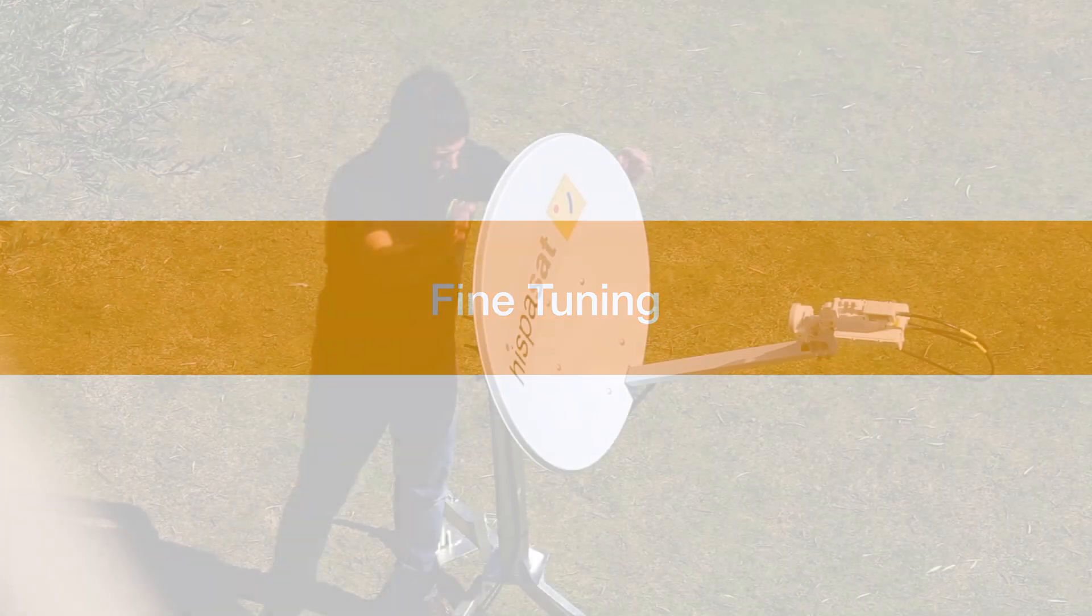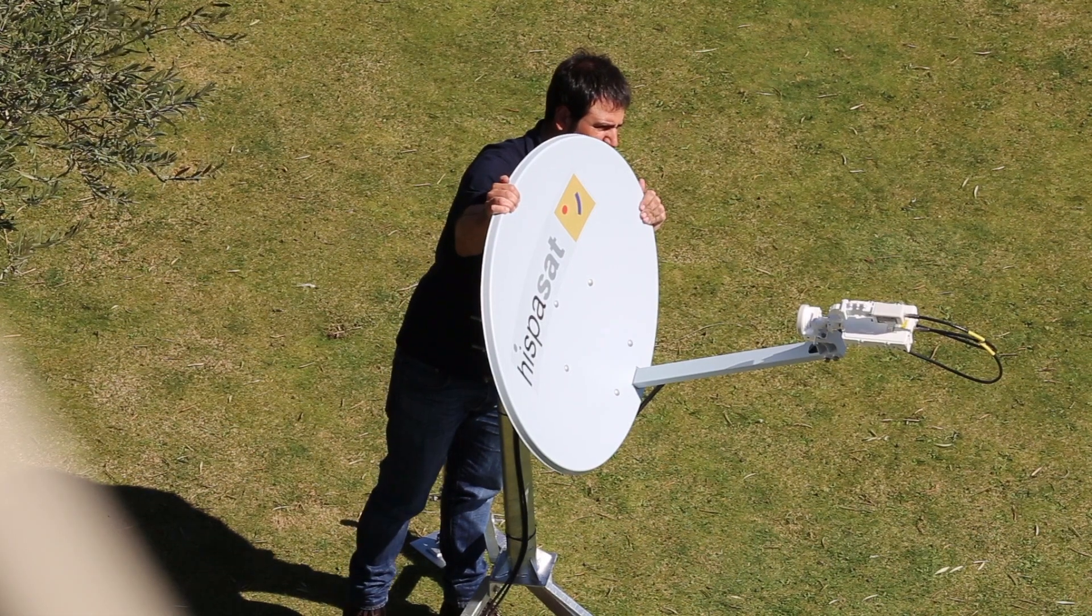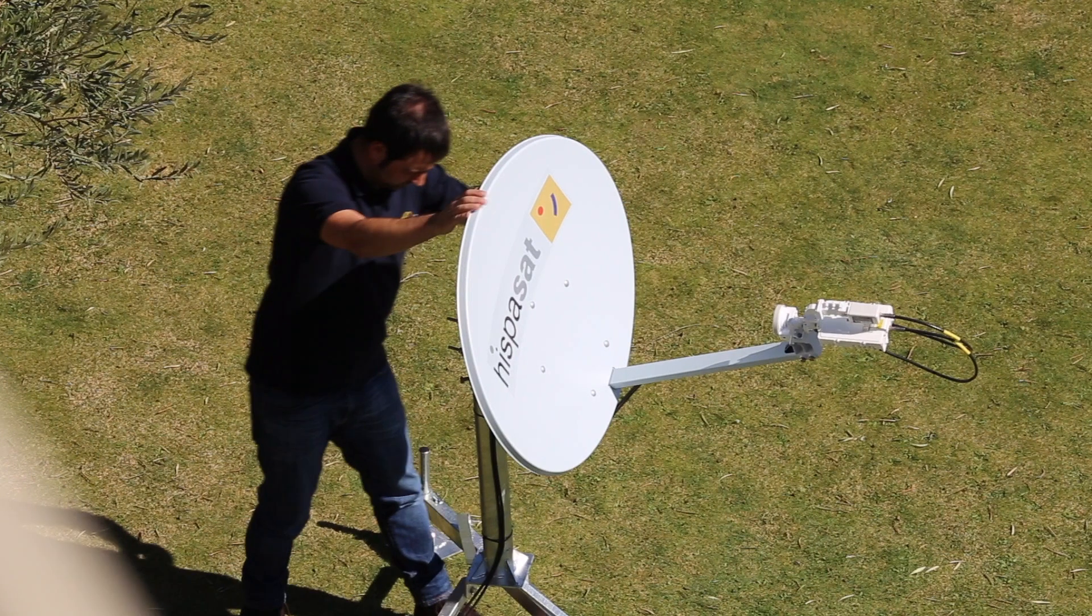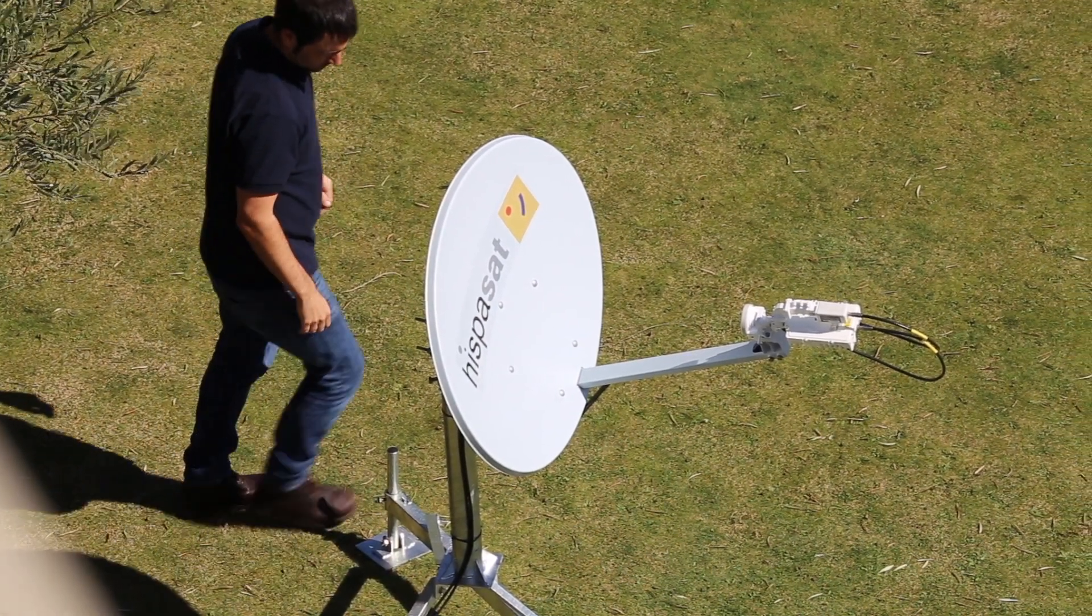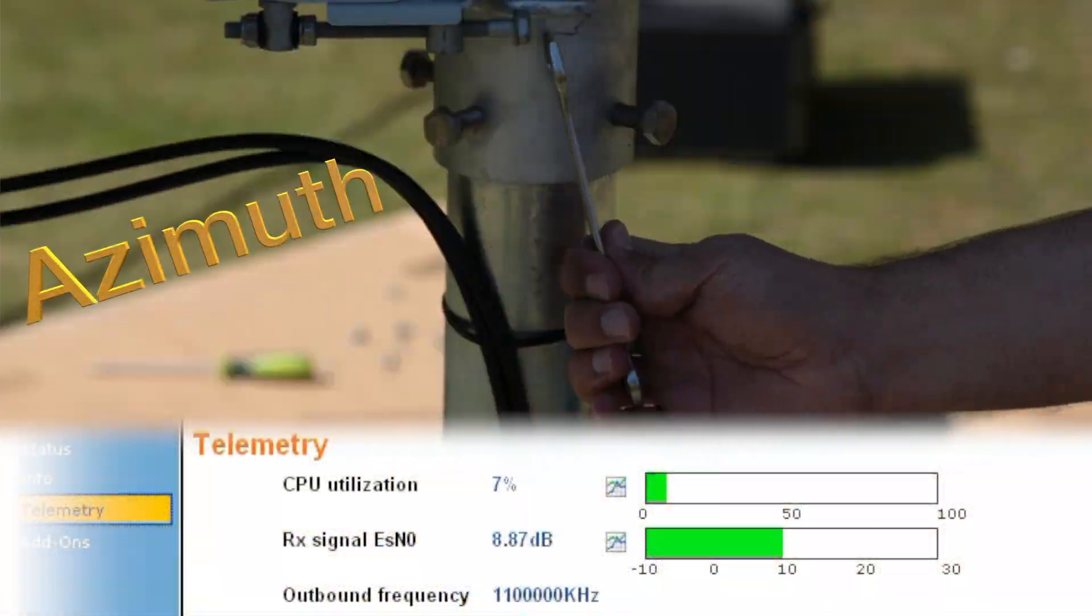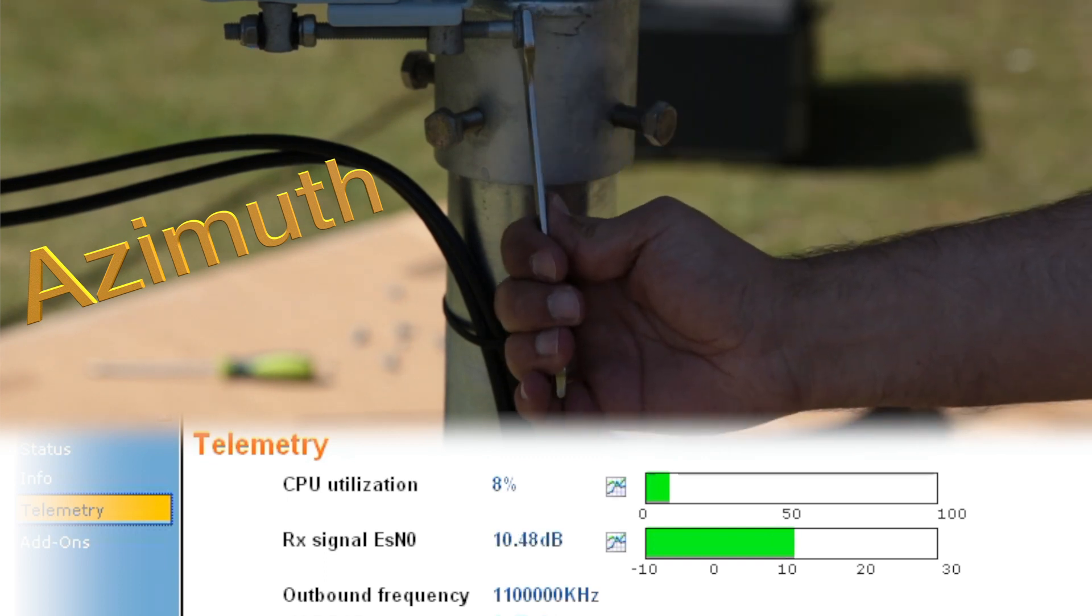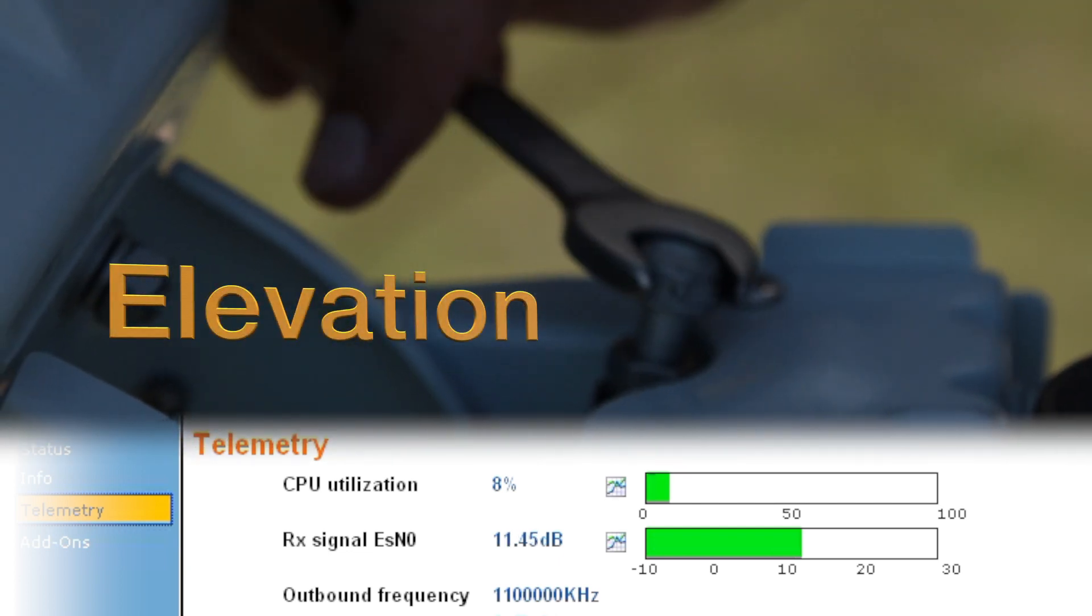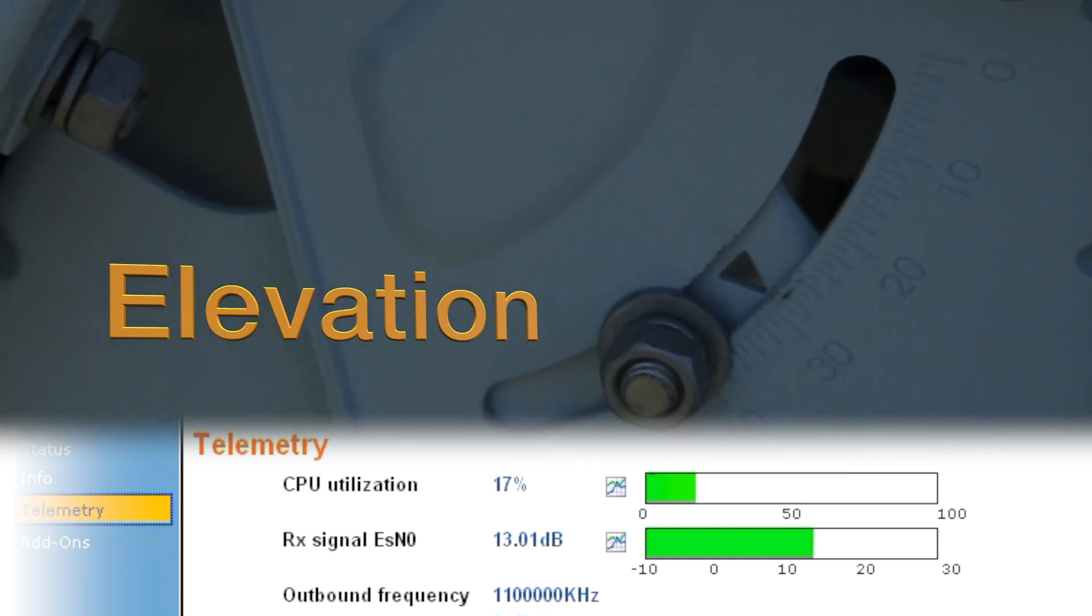Fine-tuning. A more precise orientation will be obtained from fine-tuning. To do so, we must first obtain the best value of the RxSignal ESN0, which must be above the minimum required for our GPS position. Azimuth: rotate the whole block by using the fine-tuning bolts for the azimuth. Elevation: raise or lower the antenna by using the fine-tuning bolts.